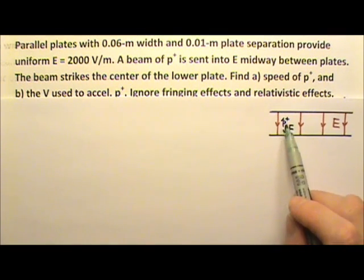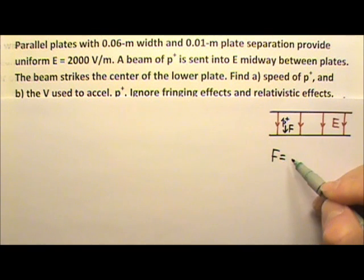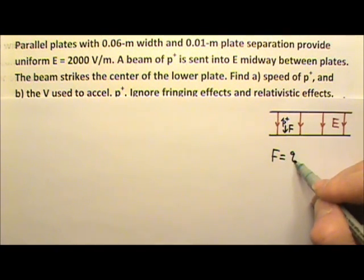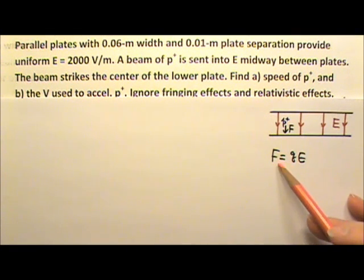For a charge in an electric field, the force on the charge can be found using the equation F equals Q times E. Because the field is uniform, this E is a constant. This means the force is also a constant, which means the acceleration caused by this force is a constant.